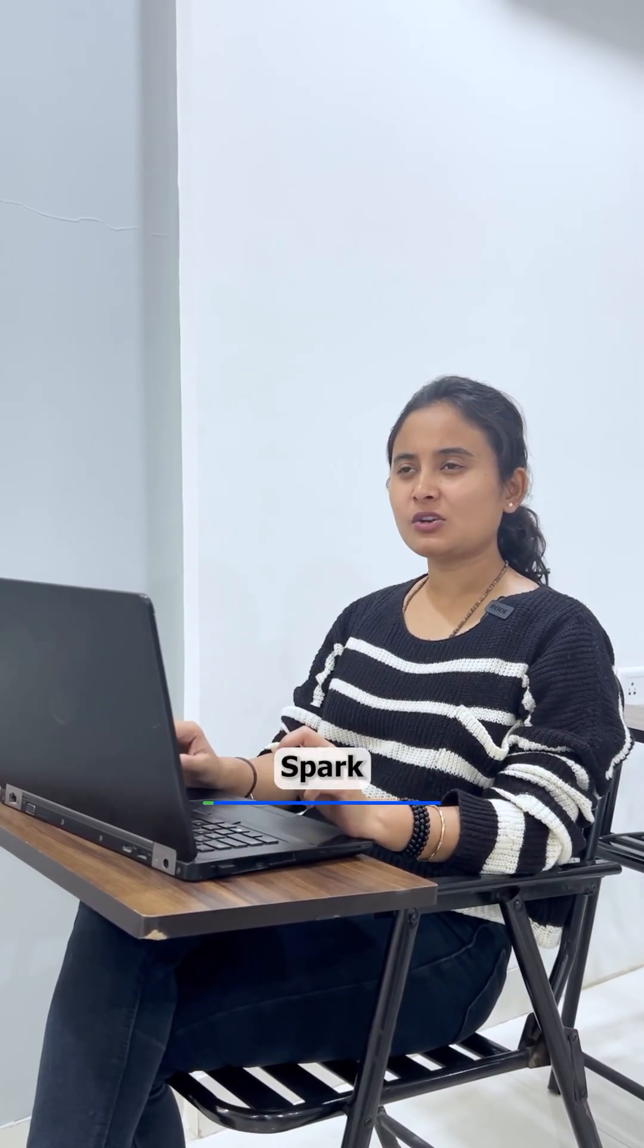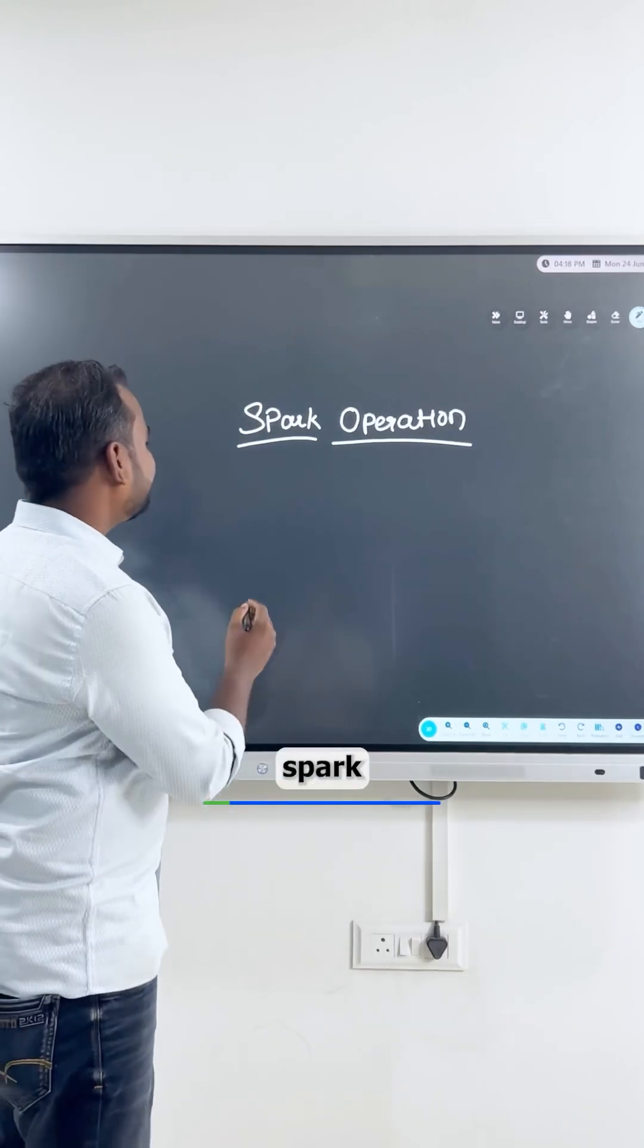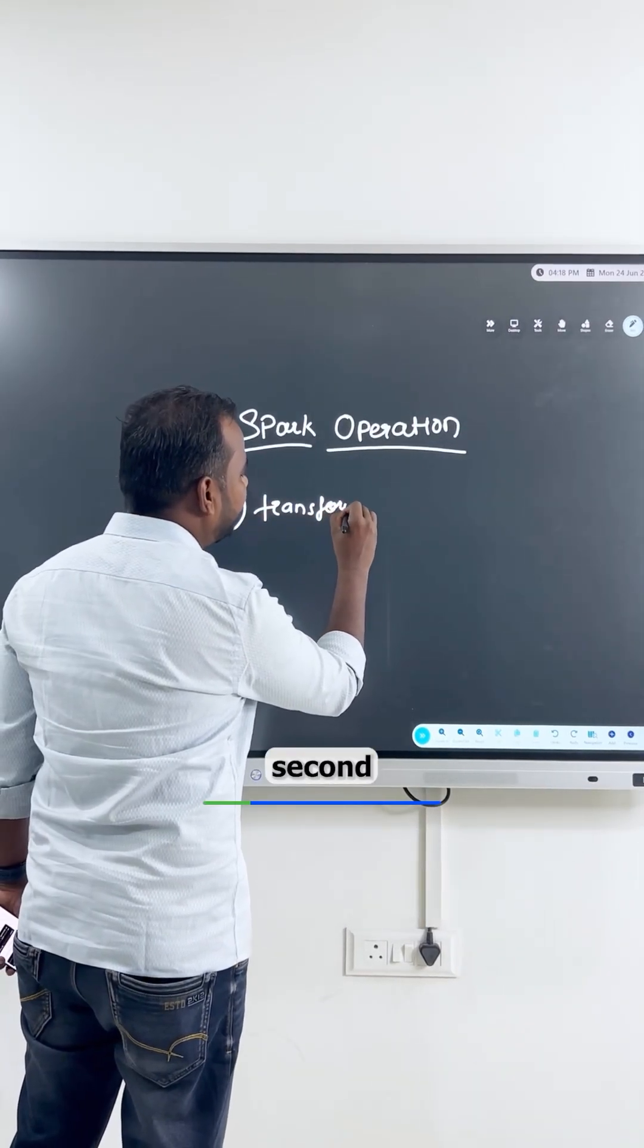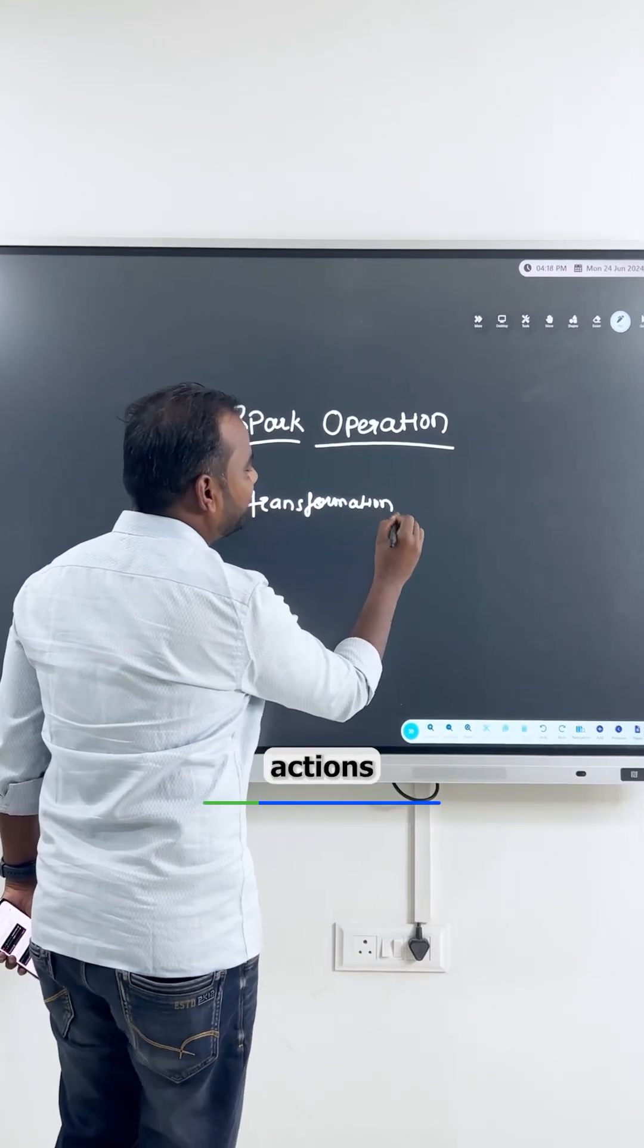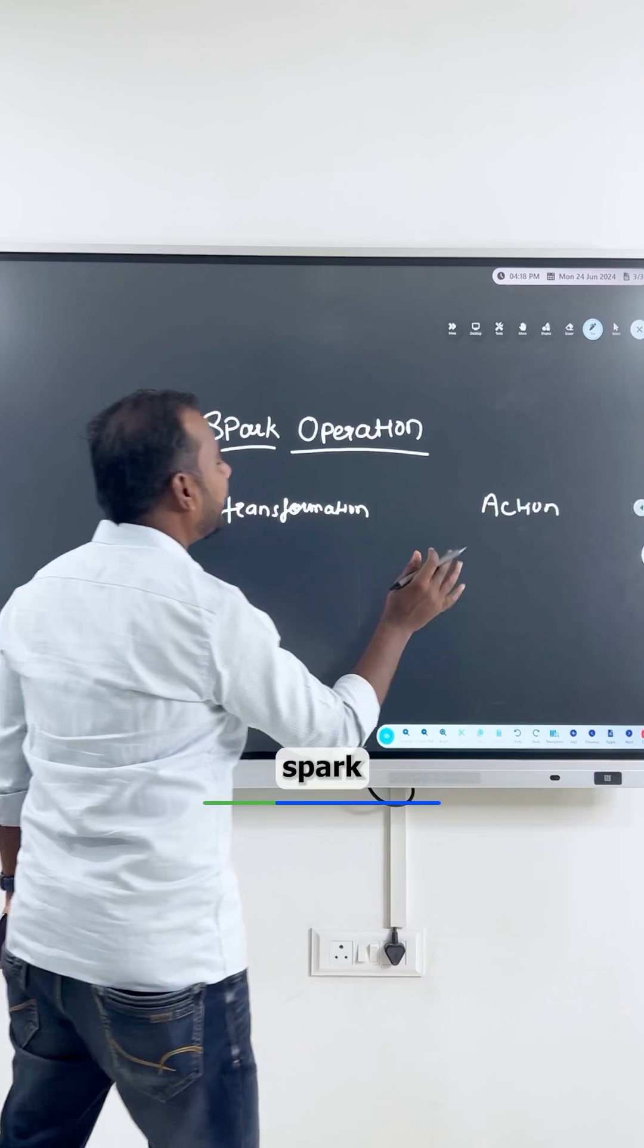Can you please explain to me about Spark operations? Devanshi, there are two types of operations available in Spark. The first one is transformation and the second one is actions. So these are the Spark operations.